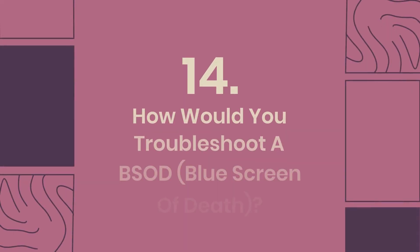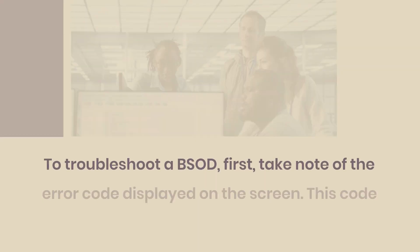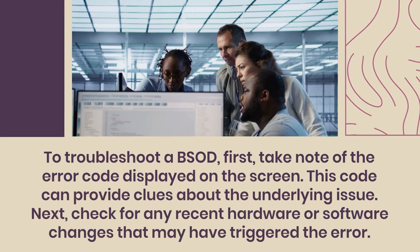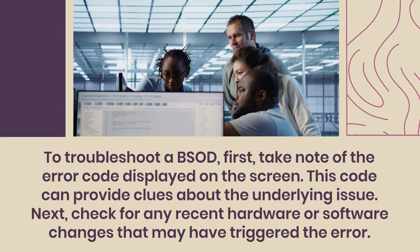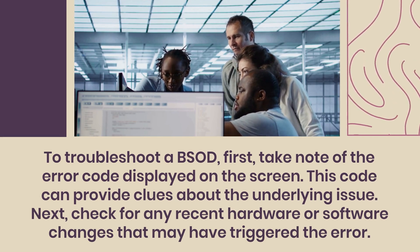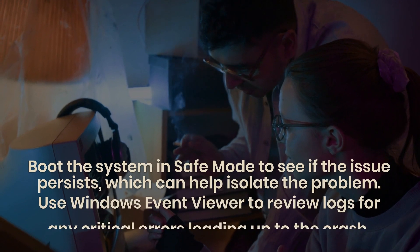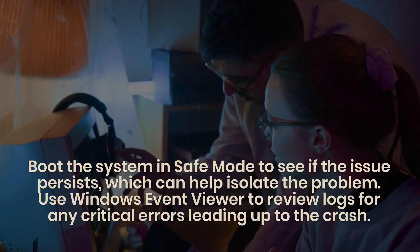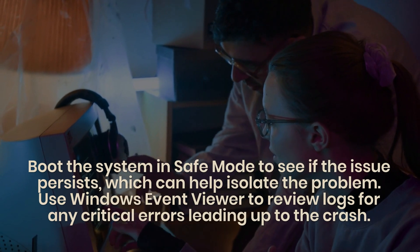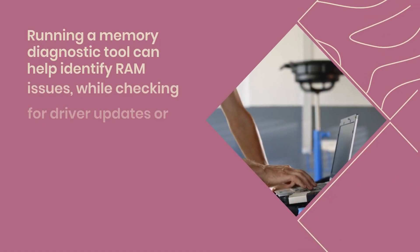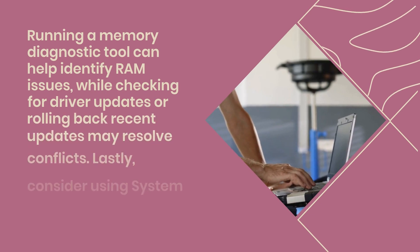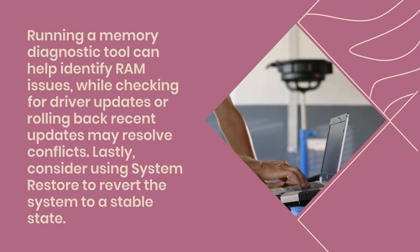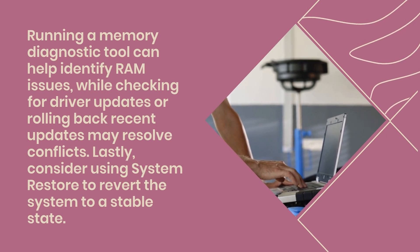Question 14: How would you troubleshoot a BSOD, blue screen of death? To troubleshoot a BSOD, first take note of the error code displayed on the screen, as this code can provide clues about the underlying issue. Next, check for any recent hardware or software changes that may have triggered the error. Boot the system in safe mode to see if the issue persists, which can help isolate the problem. Use Windows Event Viewer to review logs for any critical errors leading up to the crash. Running a memory diagnostic tool can help identify RAM issues, while checking for driver updates or rolling back recent updates may resolve conflicts. Lastly, consider using System Restore to revert the system to a stable state.